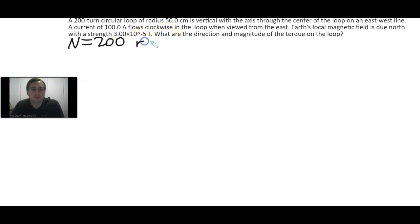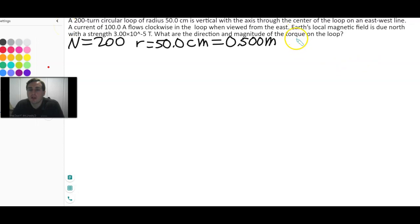We also have the radius of 50.0 centimeters. We want to get that in SI units. That's 0.500 meters. And we know something about the orientation. We'll come back to that. We also know what the current is. So I'll do the current in red. That way we can put that on the sketch. So that's exactly 100.0 amperes. That's a pretty large current. And it flows clockwise when viewed from the east.